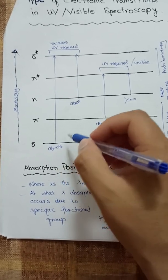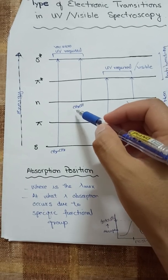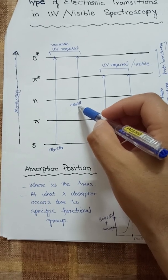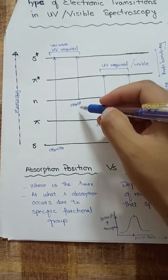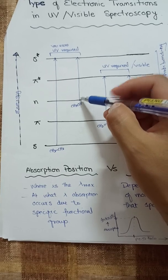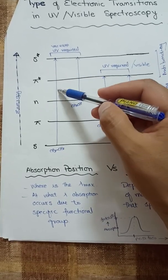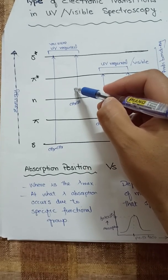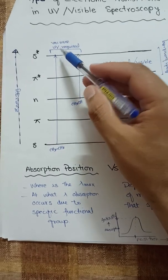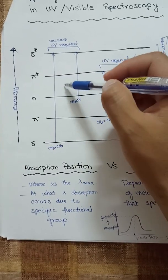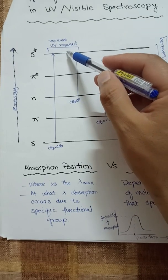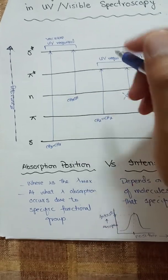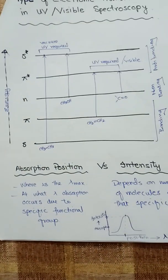Similarly, if we have non-bonding electrons in the molecule — for example, a hydroxyl group where oxygen has non-bonding electrons — those electrons can be excited to sigma star. These types of electronic transitions require high-energy radiation and fall in the vacuum UV region, around 50 to 200 nanometers wavelength.